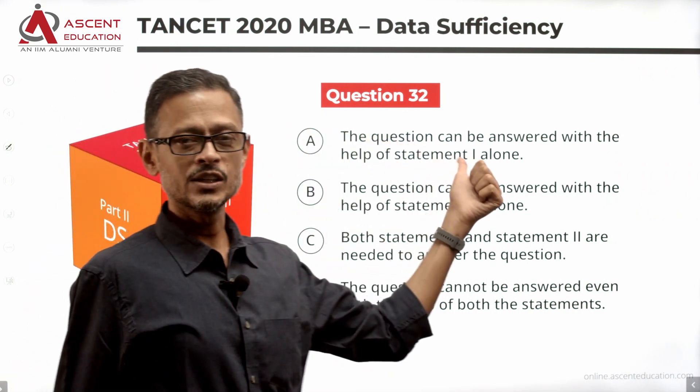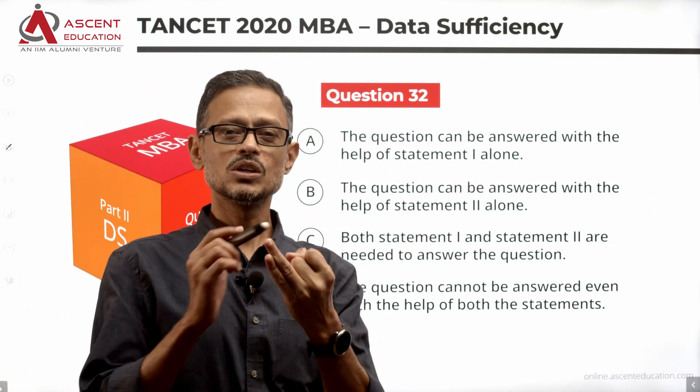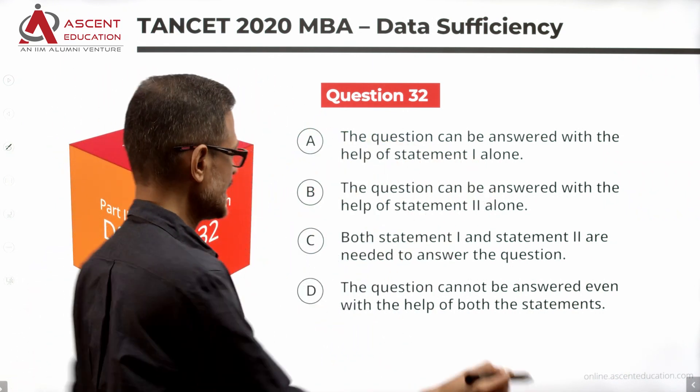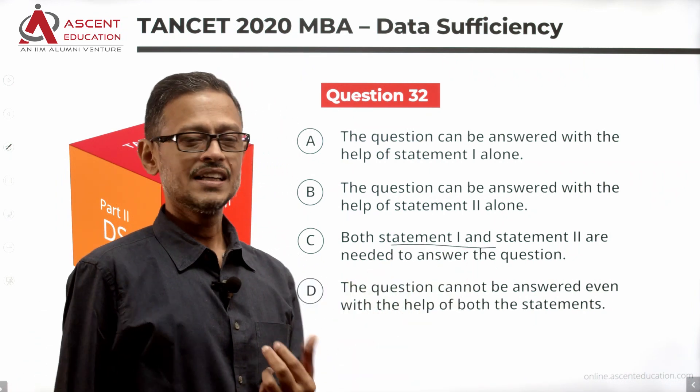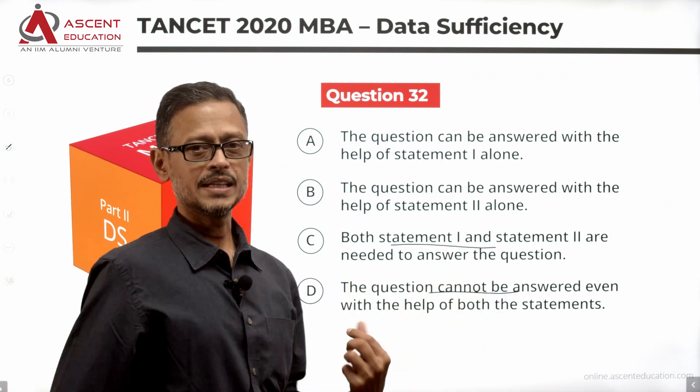Answer options are: Statement 1 alone is sufficient, answer option A. Statement 2 alone is sufficient, answer option B. Both statements are needed, answer option C. Given data is not sufficient, answer option D.